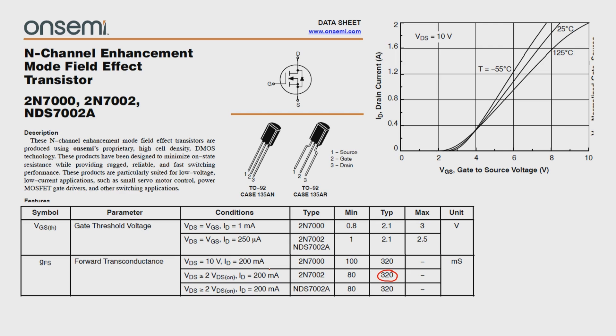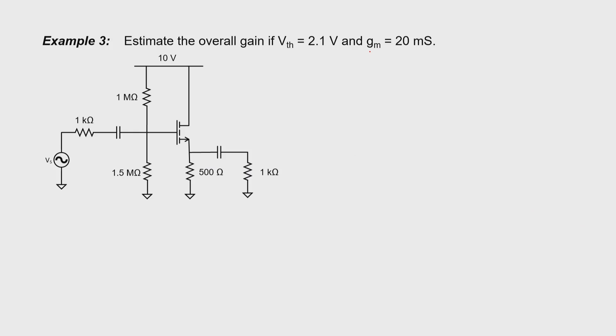Let's work one more example with common drain amplifiers, and I'm going to return to the datasheet again. We know roughly what the transconductance is when the current is 200 milliamps — that's roughly the slope of this line. In the last problem, we estimated the transconductance when operating at 100 milliamps. But in the next example, we're going to be operating at a drain current of only 10 milliamps, so we're way down close to the x-axis. I'm going to make a guess that the transconductance is a much smaller number — let's say 20 millisiemens, more than a factor of 10 below what it was at 200 milliamps. Obviously, we're going to expect a lot of variation in the transconductance when we're at that part of the graph where we have a lot of curvature. I'm also going to estimate a threshold voltage of 2.1 volts.